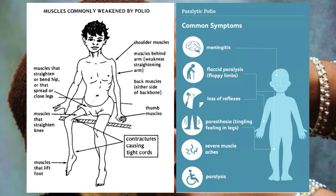Looking at this image, it shows a classic case of paralytic polio and which muscle groups are weakened by the virus. These include the shoulder muscles, the muscles behind the arm affecting the ability to straighten it, back muscles on either side of the backbone, and sometimes the thumb muscles. Patients also suffer contractures causing tight cords in their limbs, and have trouble with muscles that lift the foot, straighten the knee, straighten or bend the hip, or spread and close the legs. Key symptoms to remember are meningitis, flaccid paralysis, loss of reflexes, paresthesia (tingling in the legs), and severe muscle aches.